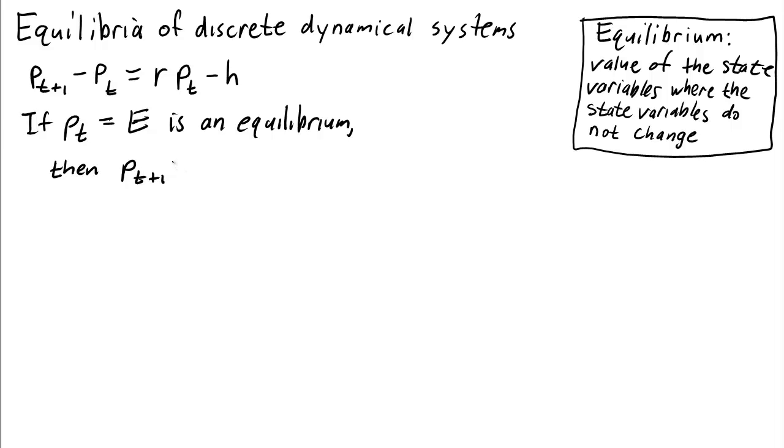So here P_{t+1} is also equal to e, and the next time step P_{t+2} is also equal to this number e, etc. That's the idea of an equilibrium - the state variable just stays at the value of the equilibrium.